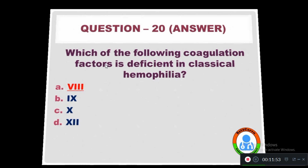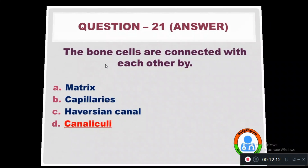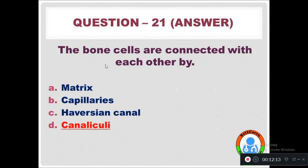Question 21: The bone cells are connected with each other by — Option A: Matrix. Option B: Capillaries. Option C: Haversian canal. Option D: Canaliculi. The right answer is Option D — bone cells are connected with each other by canaliculi.